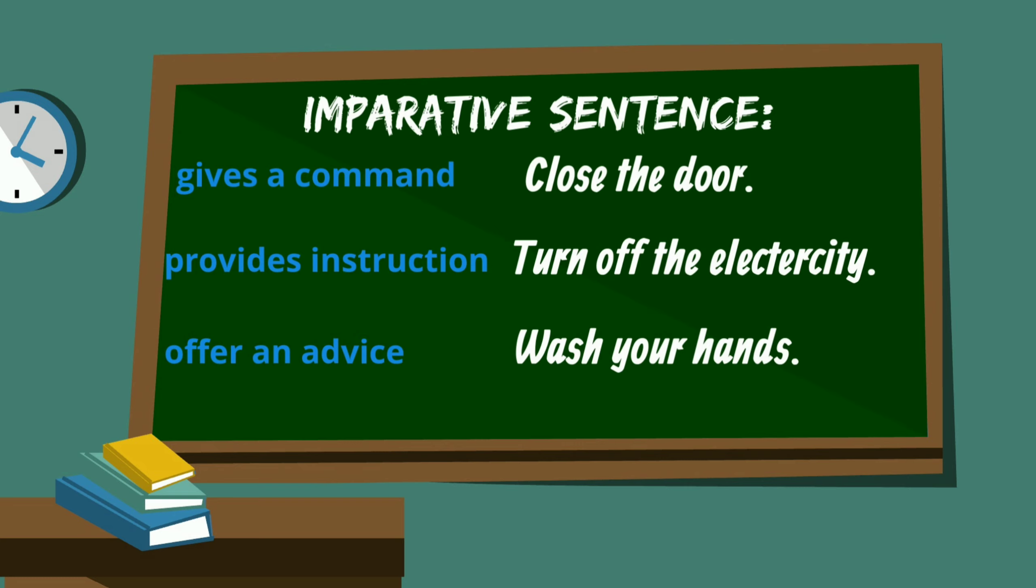Look at the first words in each of these sentences. Close, turn off, wash. They're all verbs. Imperative sentences usually begin with a verb and the subject is not stated. As these sentences are giving a direct order, the subject is you.